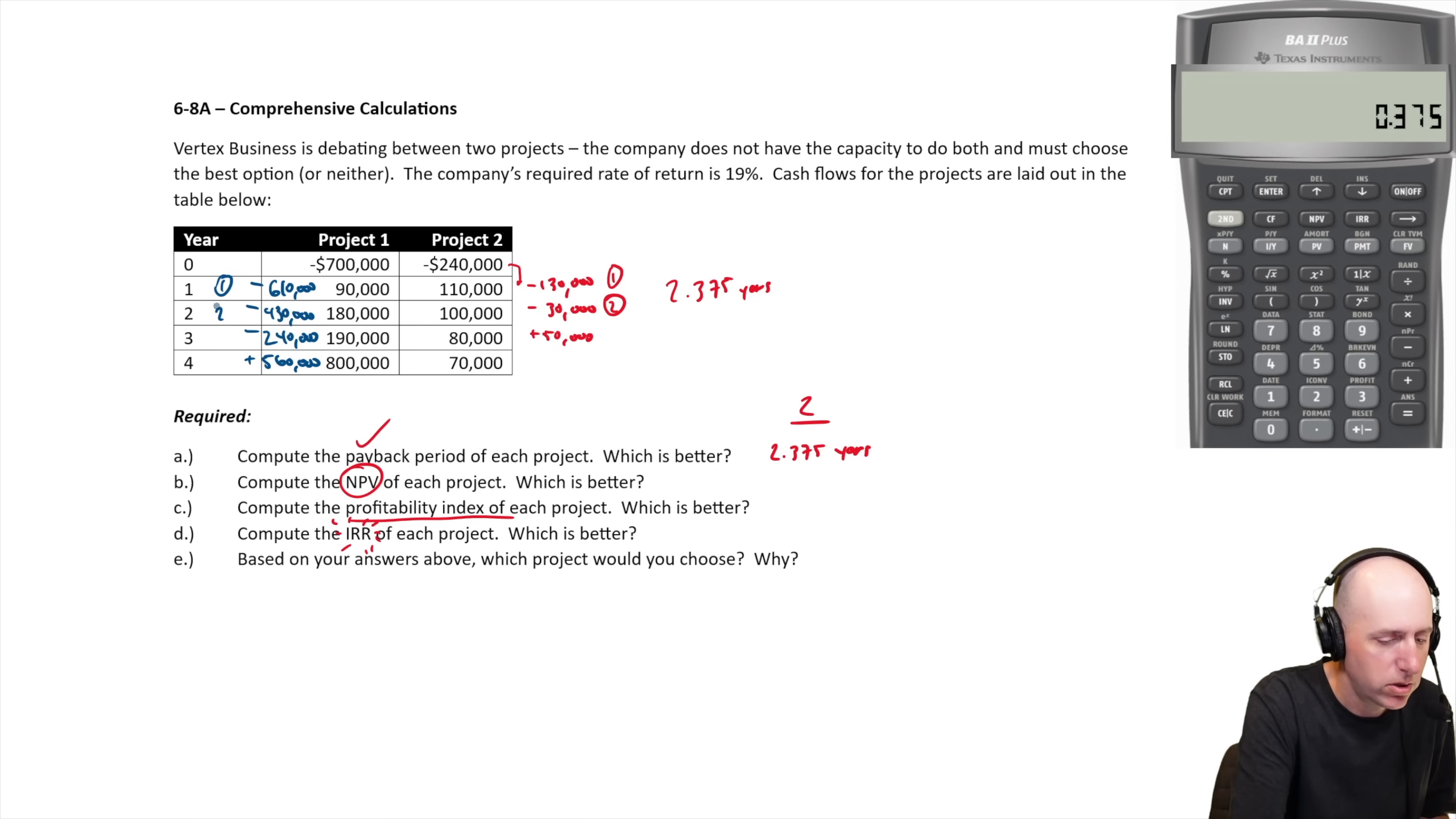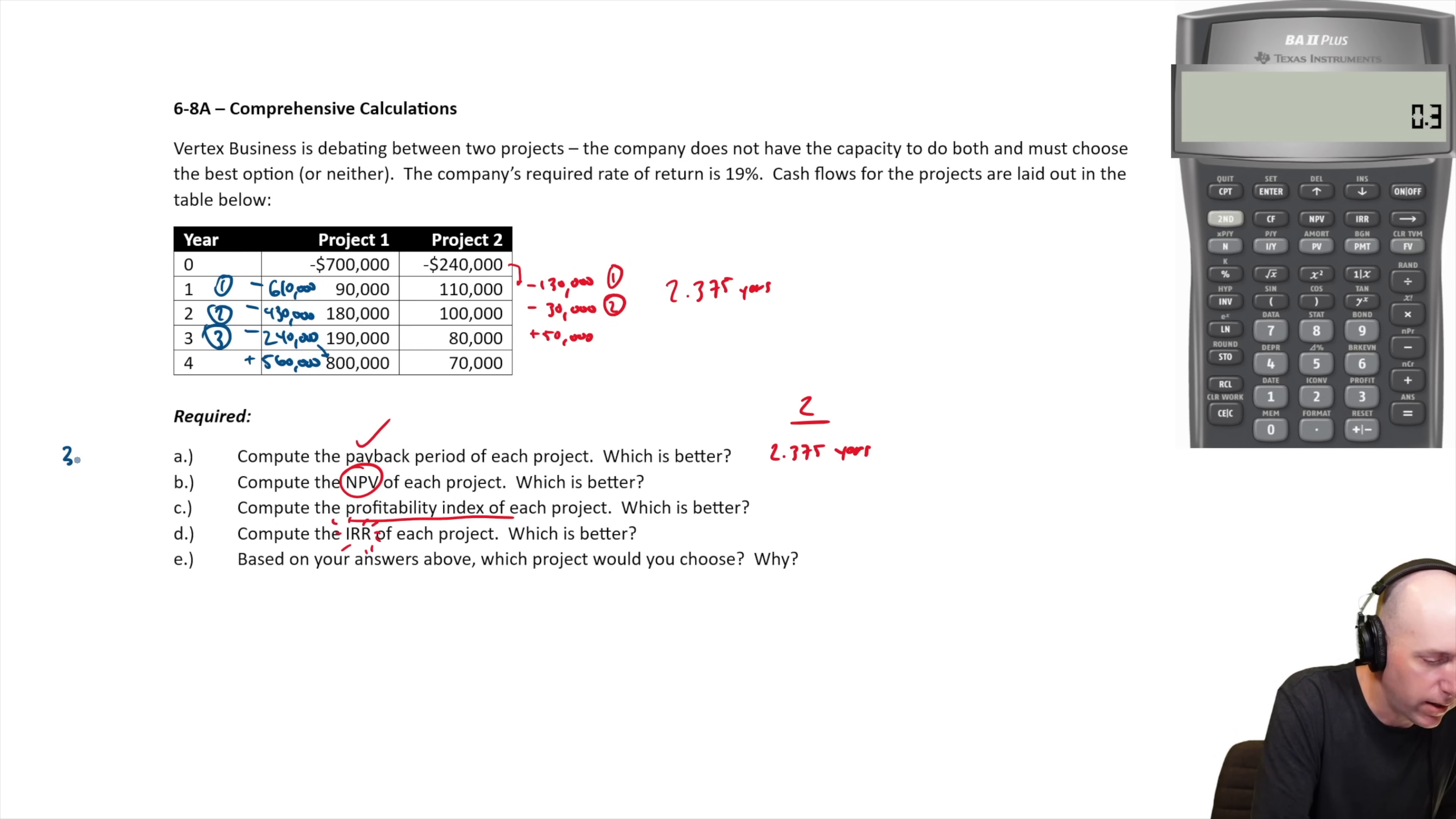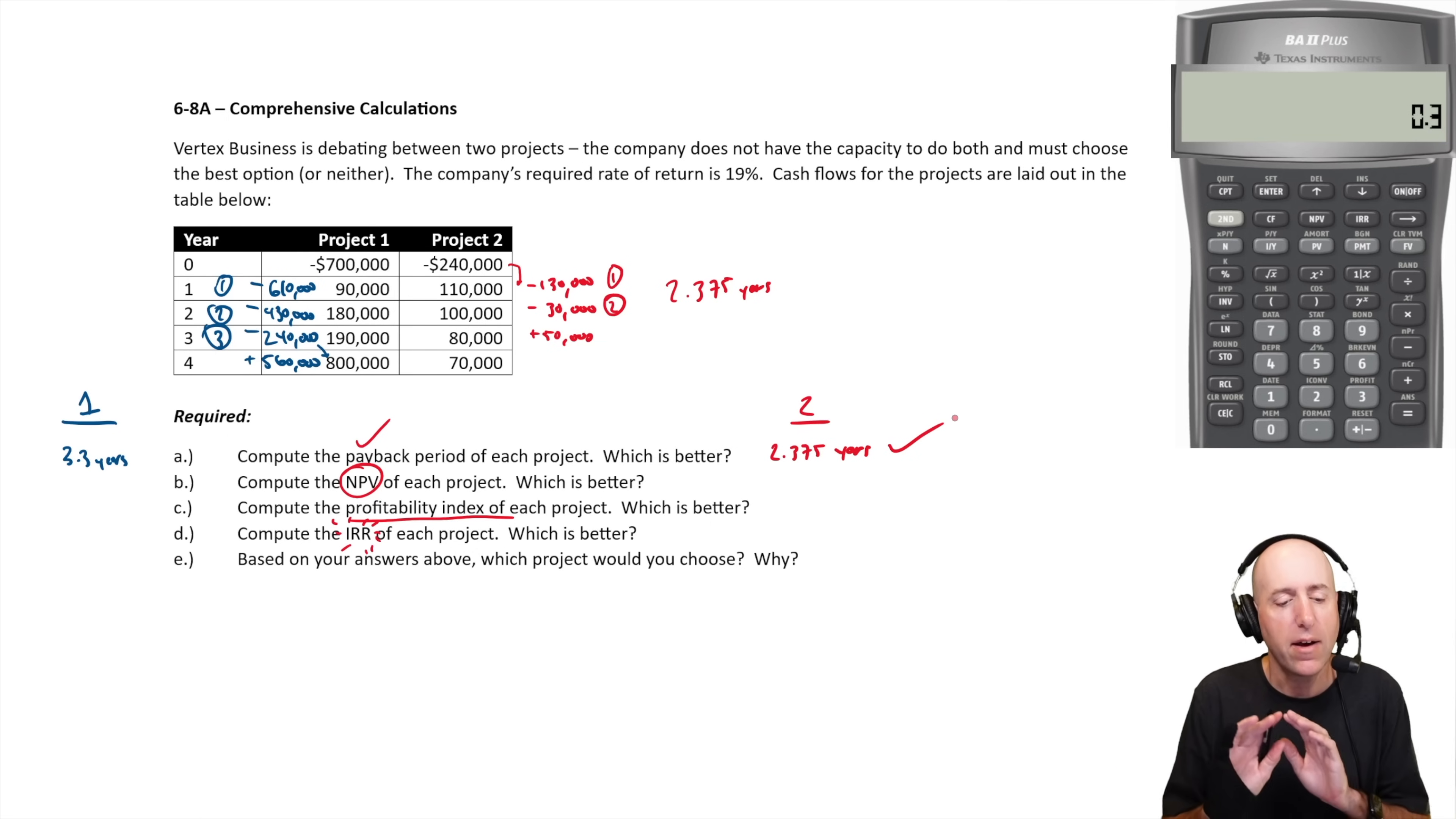So it's 1, 2, 3 years plus a partial last year, we had 240 to make, we made 800. So 240 out of 800 is 0.3. So it's 3.3 years for project one. So what would you rather it take to pay back your project, 2.3 years or 3.3 years? You'd rather your project payback faster. So definitely a checkmark on the side of project two, which is better, project two for sure.